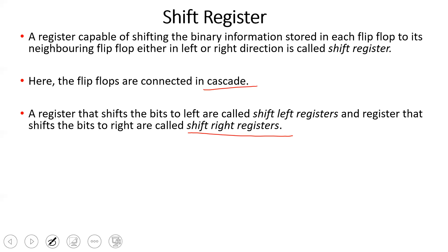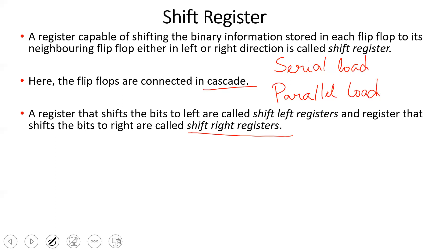A shift register is a group of flip-flops. There are two types of loading: serial load and parallel load. In serial load, data is fed into the first flip-flop and shifted to the neighboring flip-flop one at a time. In parallel load, data is loaded into all flip-flops simultaneously.